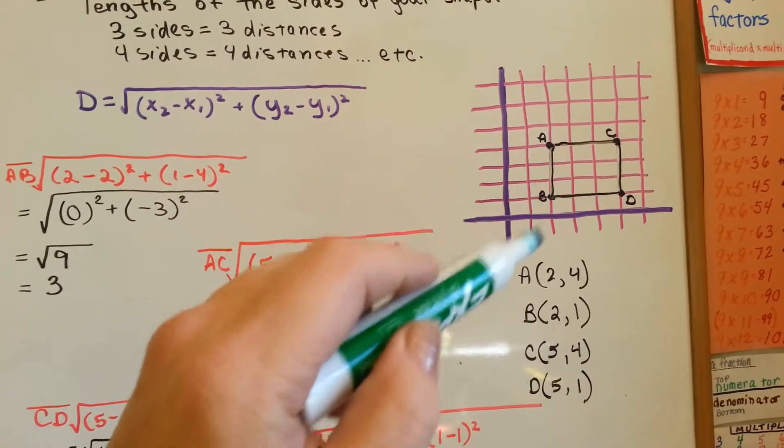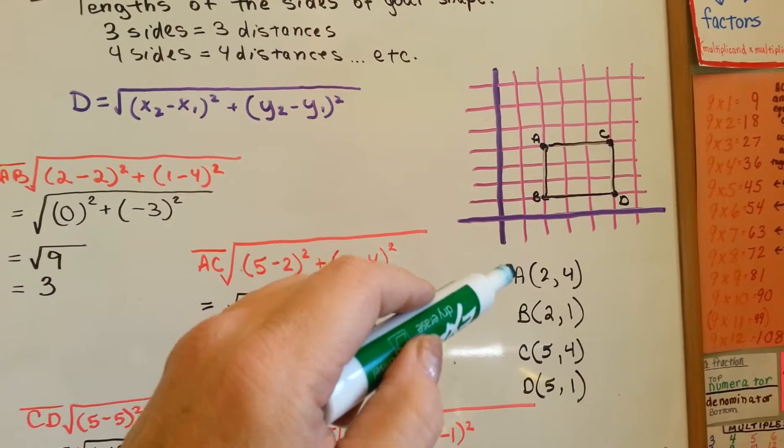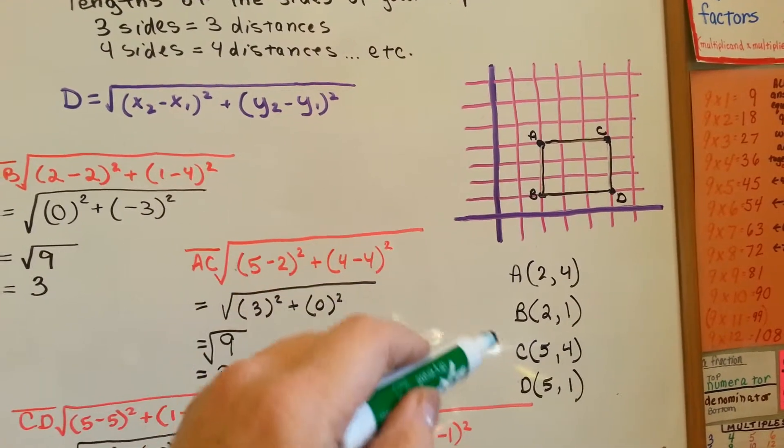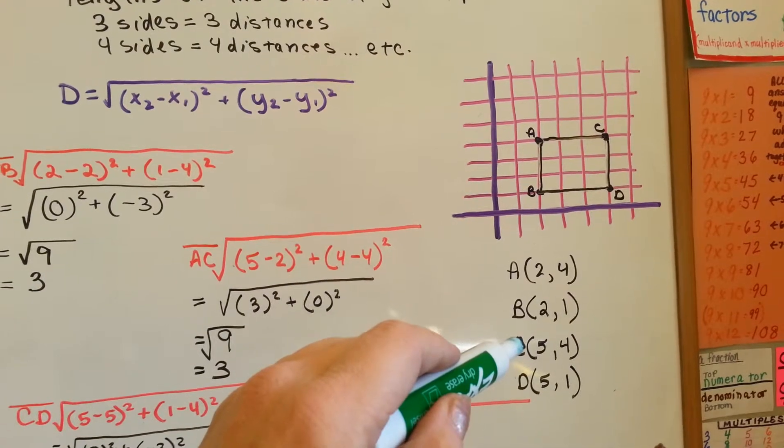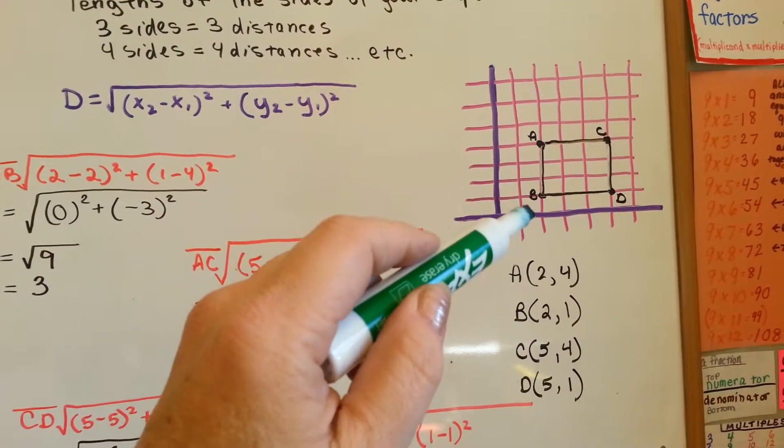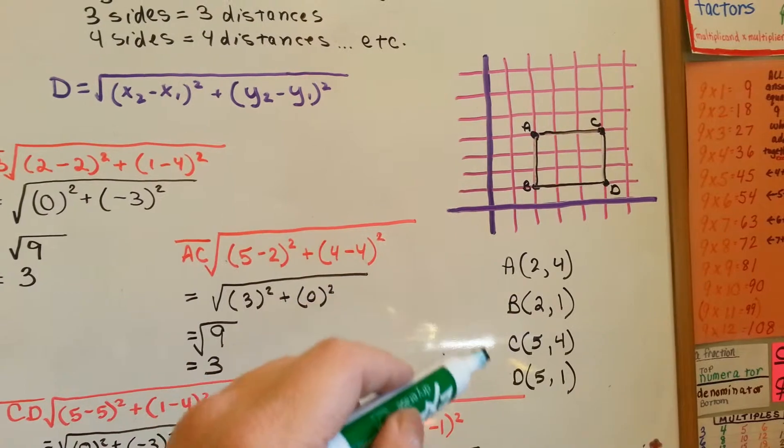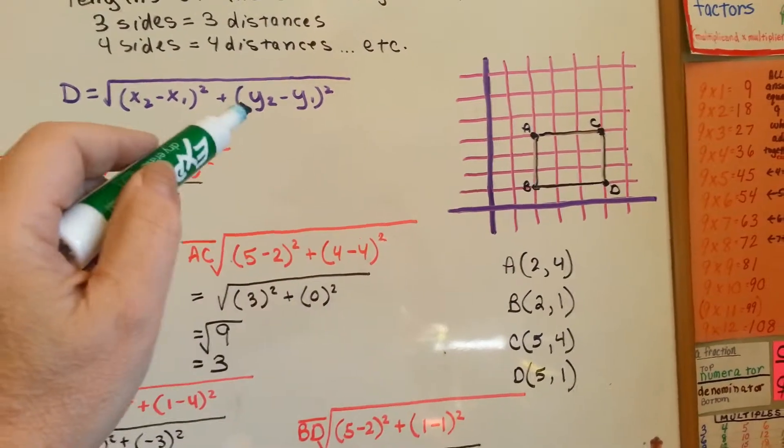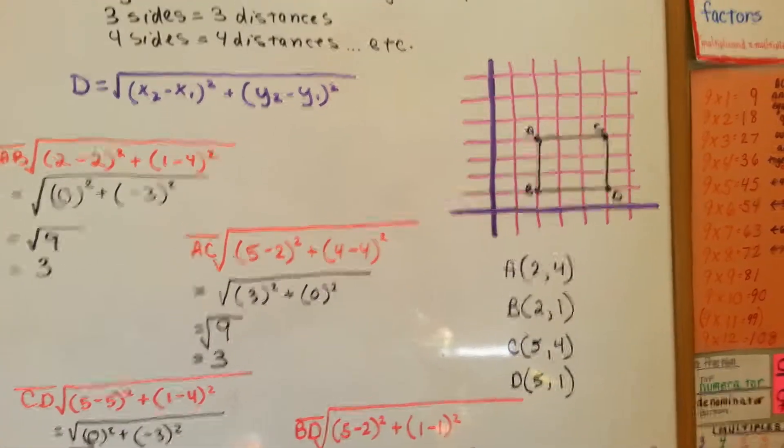When we go to do line AC, that's going to be the first ordered pair and that's going to be the second ordered pair. When we go to do BD, that will be the first ordered pair and that will be the second ordered pair for the formula. We just mix and match.